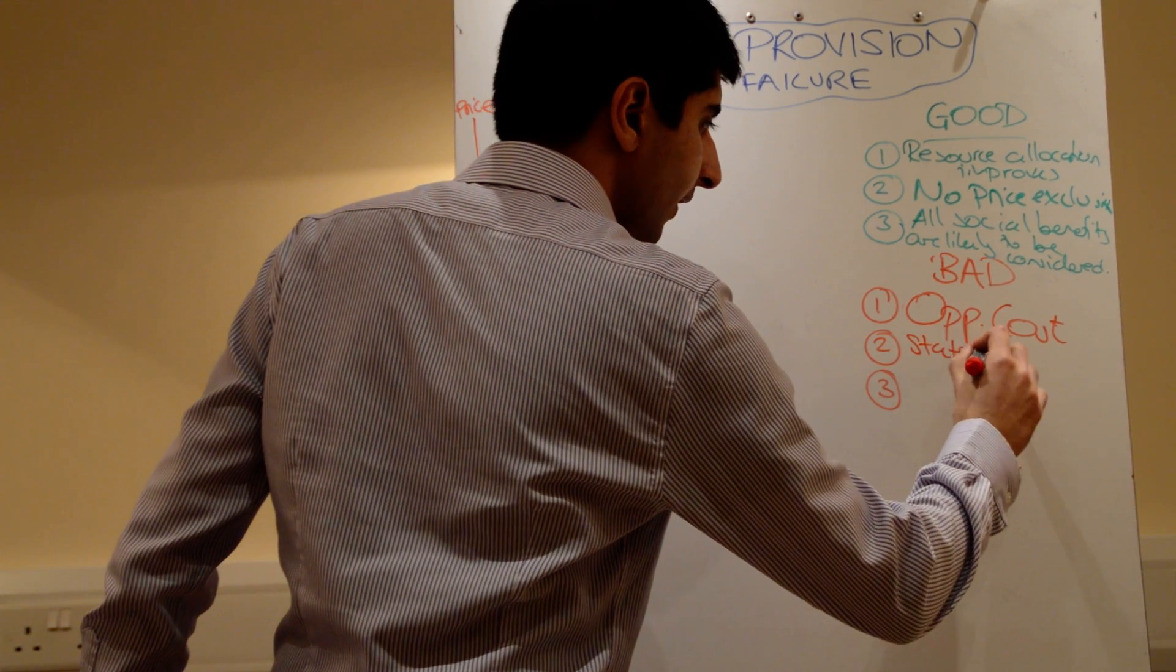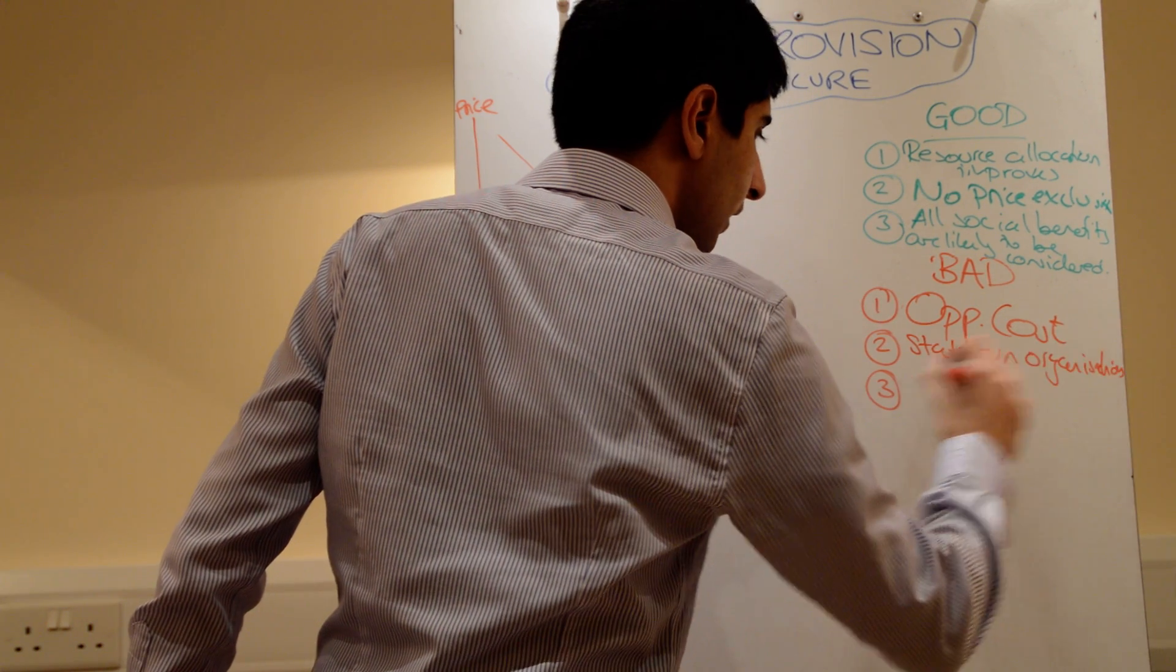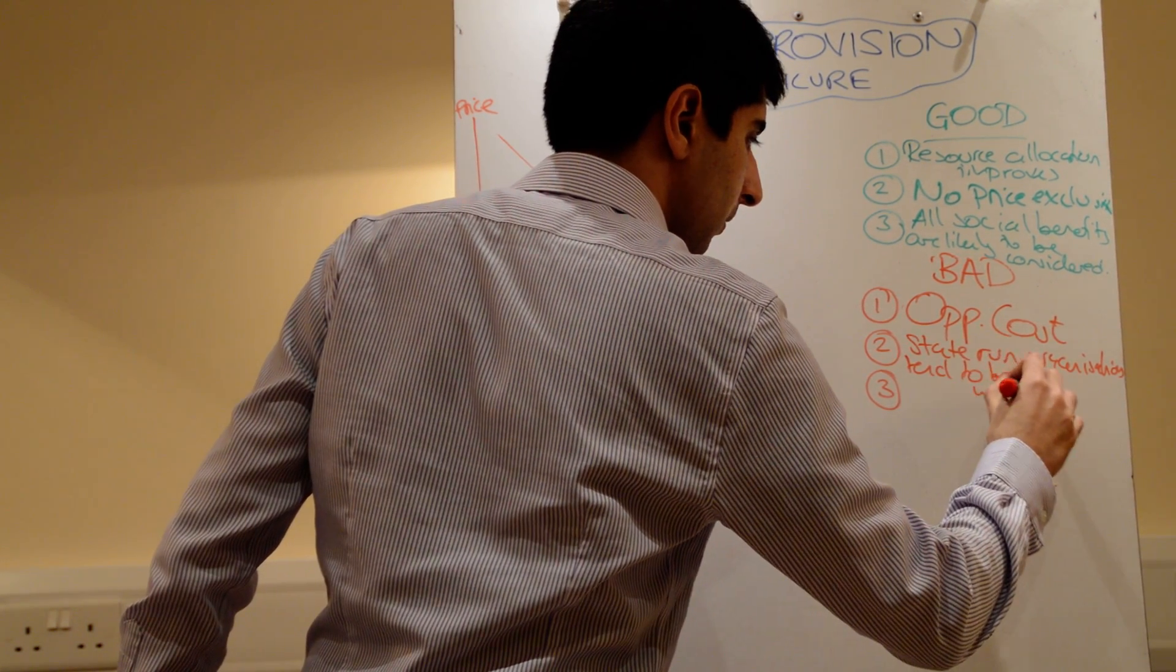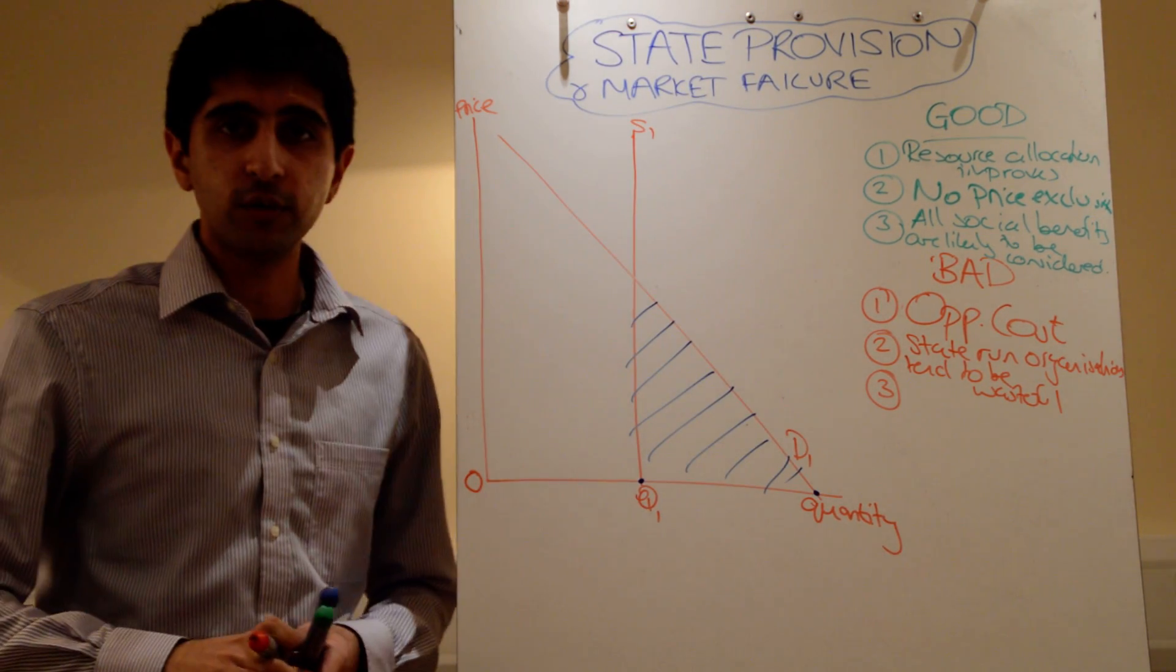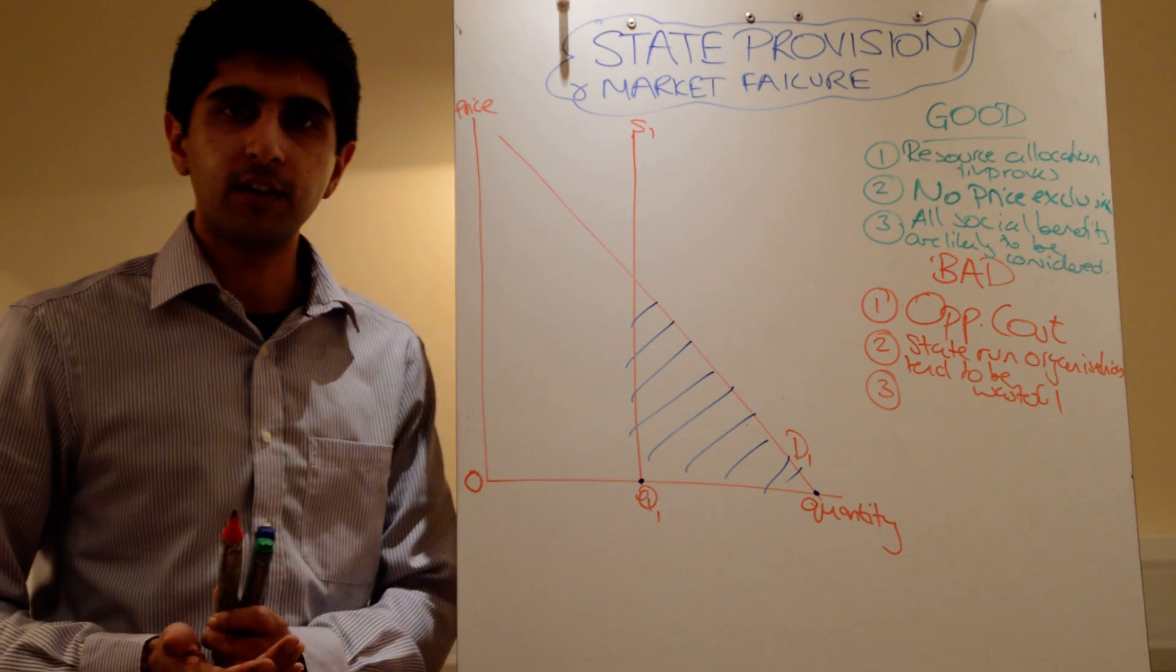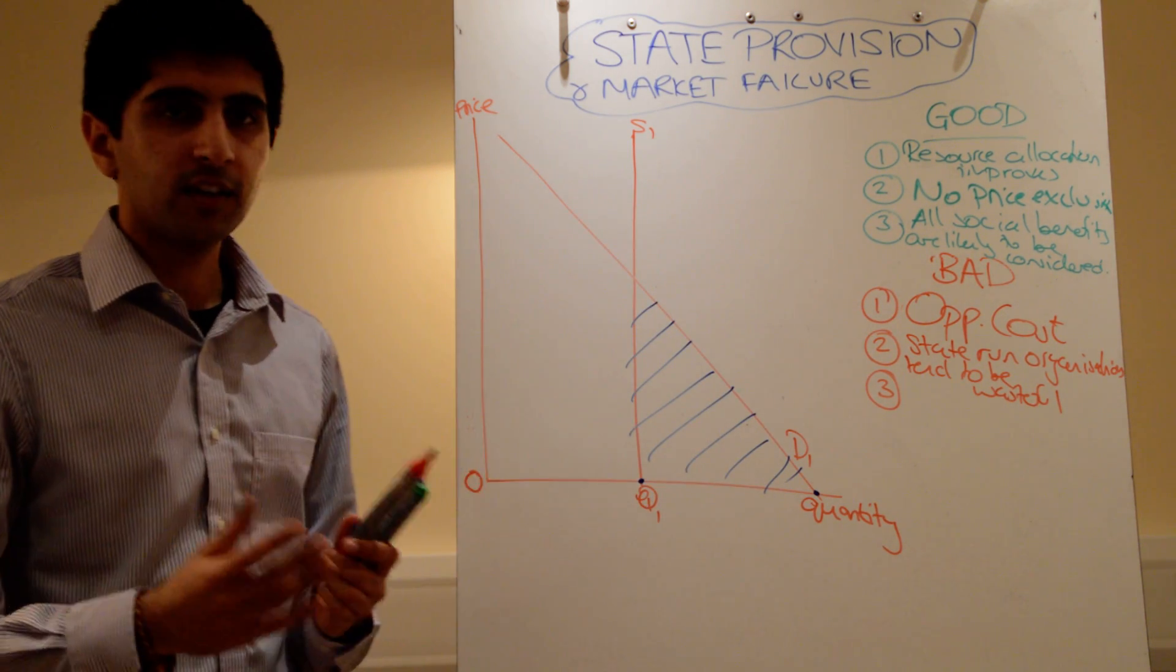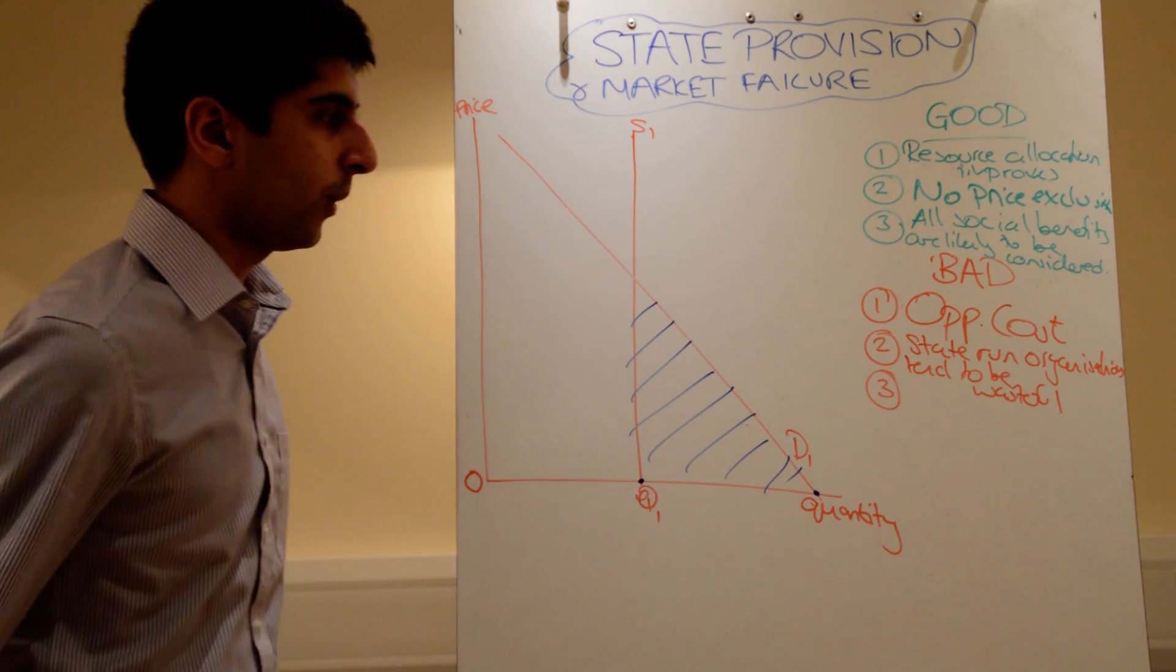You can also say that state-run organizations tend to be wasteful. There's no profit motive. If the state's providing all these resources and setting up organizations, these organizations are not running themselves for profit. Therefore, a lot of waste could creep in and that's not a good thing. Waste, inefficiency is bad and state-run organizations tend to be very wasteful.